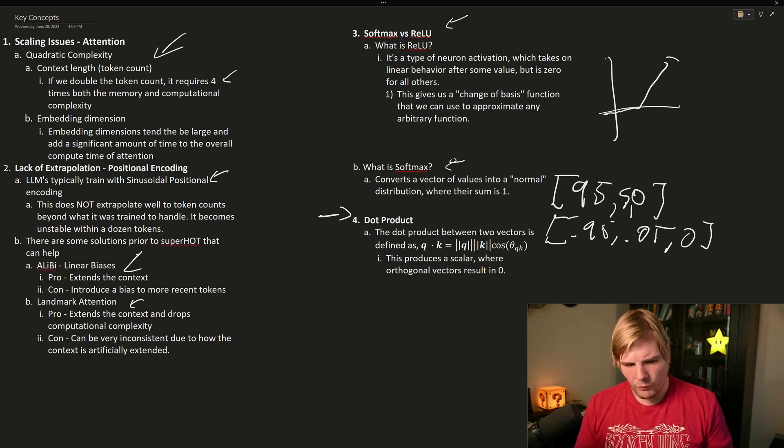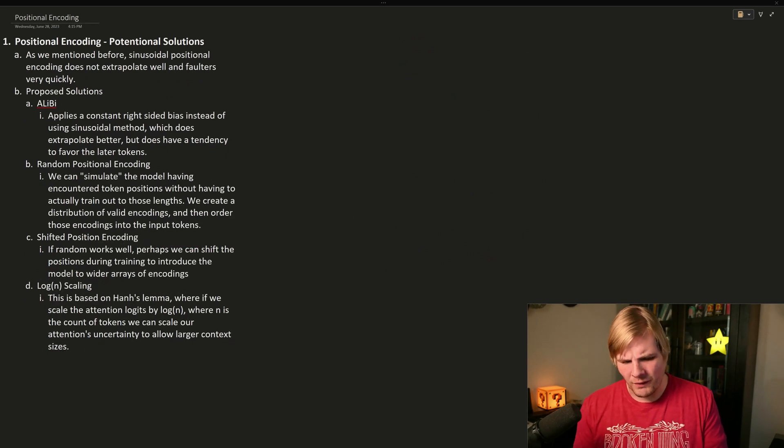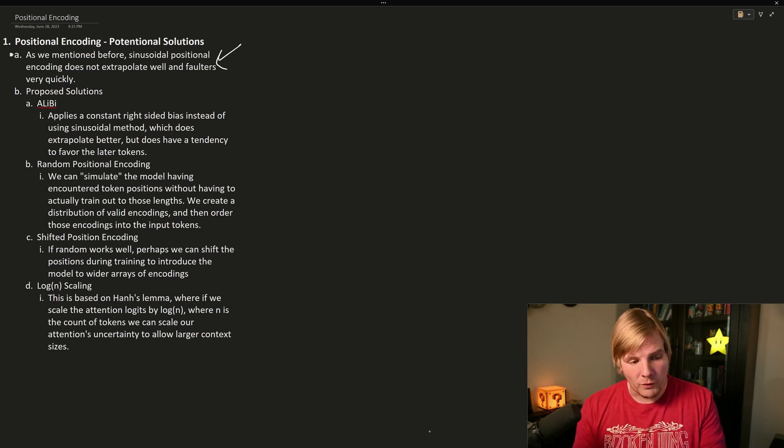So now let's move on and talk about what is positional encoding and how can we start to improve the problem here in positional encoding. How can we start tackling this problem of positional encoding getting in the way of increasing context length? Well, as we mentioned before, sinusoidal positional encoding, which is the default one that we train our models on, just doesn't extrapolate well and it falters very quickly. So let's remind ourselves what positional encoding is for.